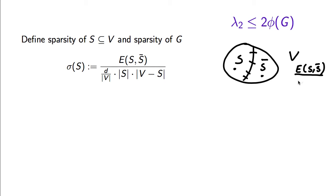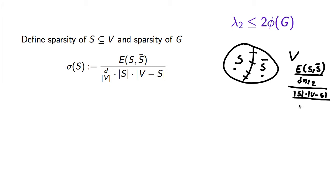In a d-regular graph, the total number of edges is dn over 2. In the denominator, instead of looking at the total number of pairs of vertices that become disconnected if this number of edges is removed, we look at what fraction of all the pairs of vertices become unreachable. We normalize by the total number of pairs of vertices, which is n choose 2, which we approximate by n squared over 2. So when we simplify this expression, this is what we end up with, where n is the number of vertices.